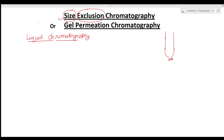In adsorption chromatography, there is an adsorbent filled in the column as the stationary phase, and the solute particles get adsorbed on the surface of the silica or other adsorbent particles. In partition chromatography, both the mobile phase and stationary phase are liquids, and the solute is being partitioned between them.